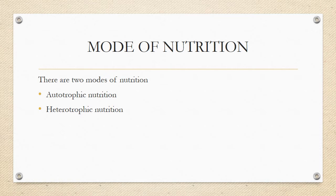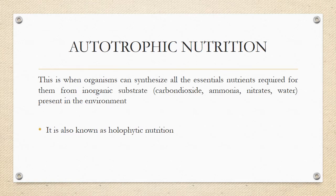We have two modes of nutrition. The first one is autotrophic nutrition, while the second one is heterotrophic nutrition. Autotrophic nutrition is when organisms are able to synthesize all the essential materials required for them from inorganic substrates present in the environment. From the word 'auto,' that means they are able to do something by themselves — to manufacture food by converting inorganic substrates present in the atmosphere.